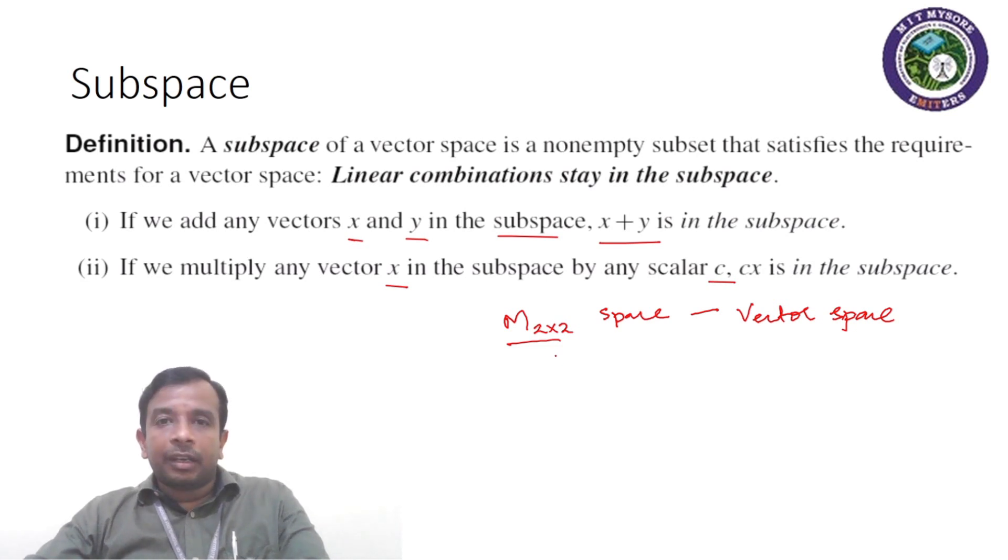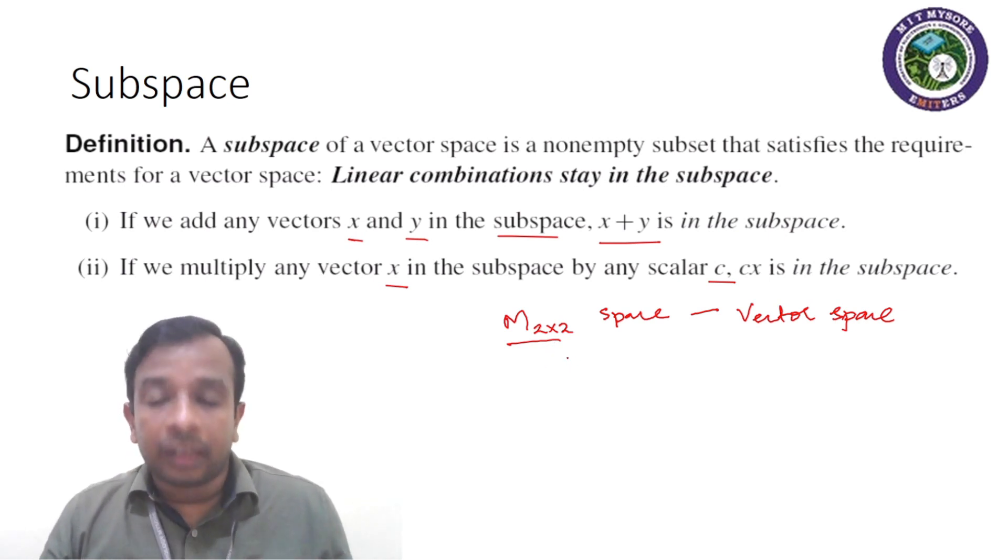I am hereby letting you know that it is a vector space. So you may want to check with vector addition and scalar multiplication of M2 cross 2 matrices and come up with your argument. And in case of doubts, please feel free to write in the comments, so I will be able to reply to the same.